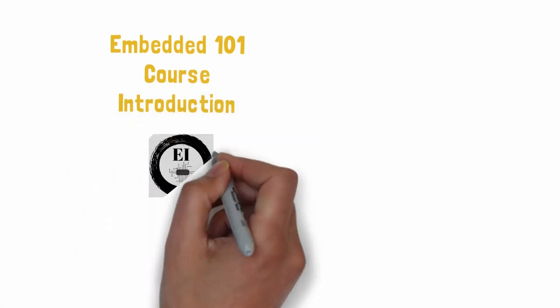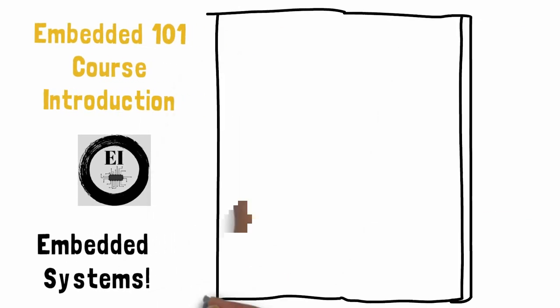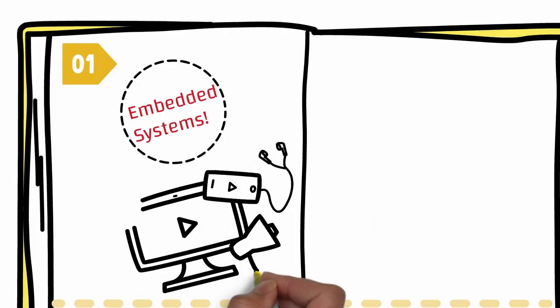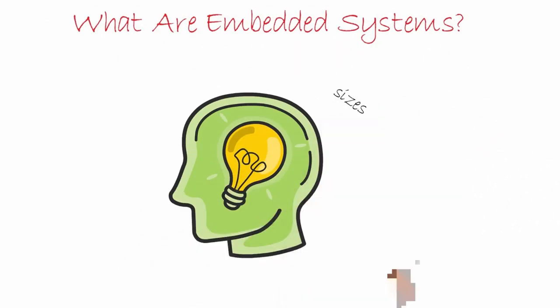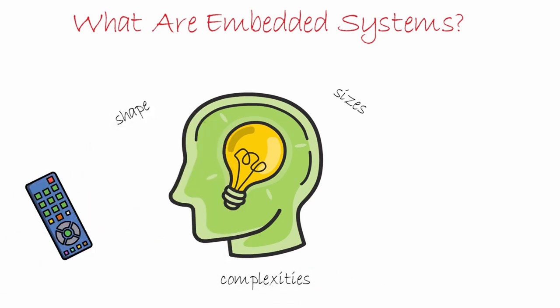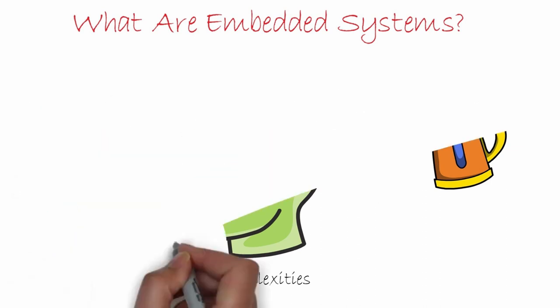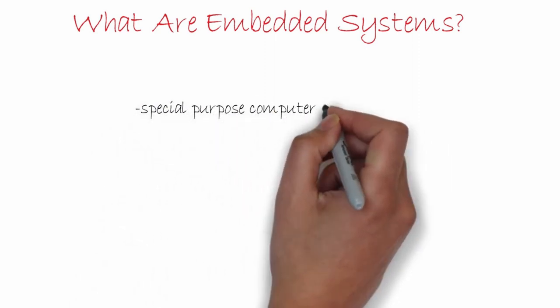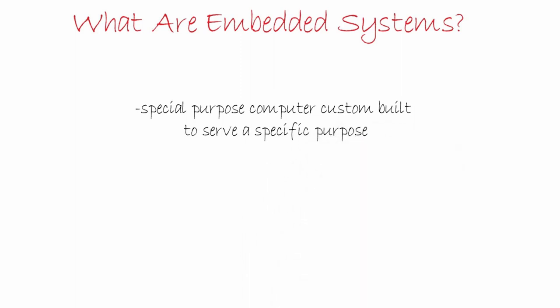Hello inventors, welcome back to our course on embedded systems. Let's begin. Embedded systems come in a wide variety of sizes and complexities, and are hence a bit hard to define. Let's try to get a basic understanding of what an embedded system really is and how to classify them. A simpler definition would be: an embedded system is a special purpose computer, custom-built to serve a specific purpose.